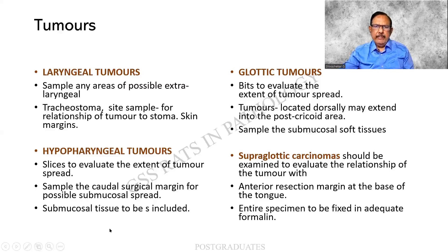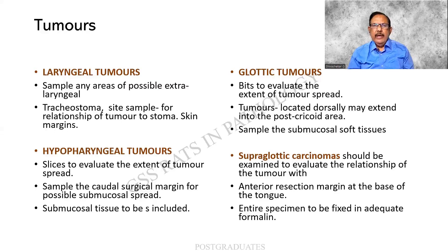Why this complexity? For glottic tumors, you will have to take multiple bits — not only from the mucosa but also from the submucosal tissue right into the cricoid cartilage and so on. The sampling should be adequate so as to tell us the extent of the tumor.